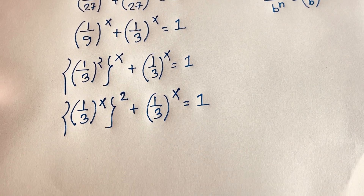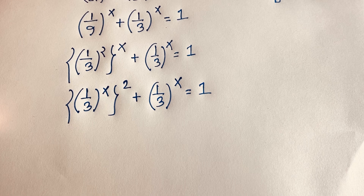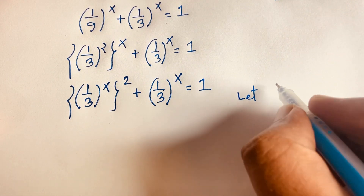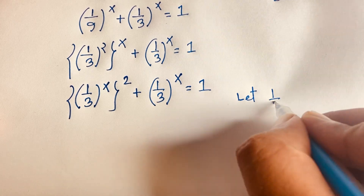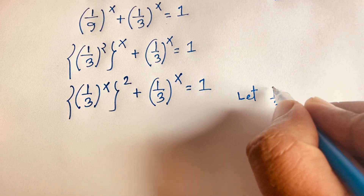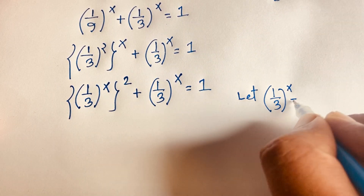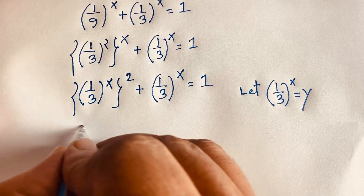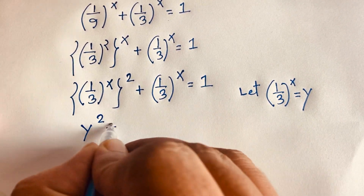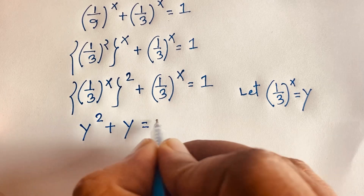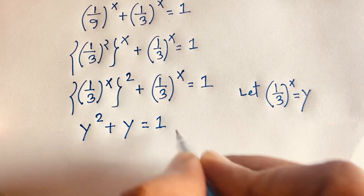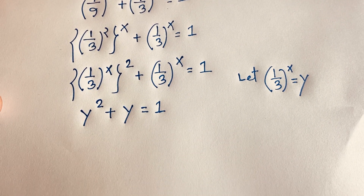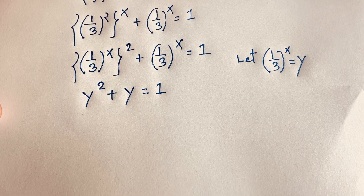You can see that (1/3) to the power x is common in both terms. So let (1/3) to the power x equal y. Then we get y squared plus y is equal to 1 — a wonderful quadratic equation.